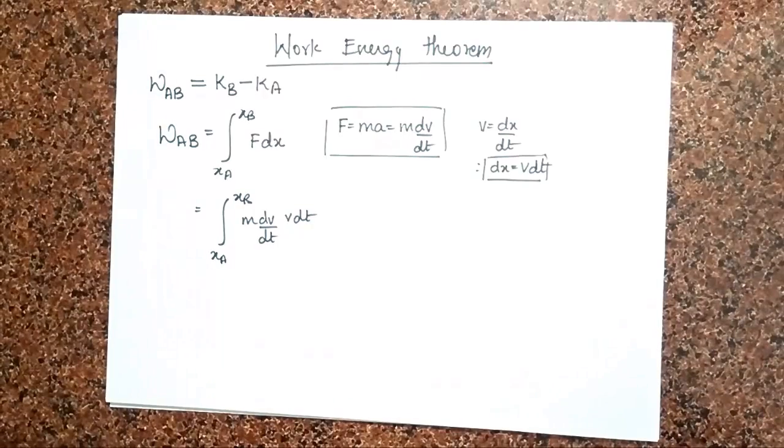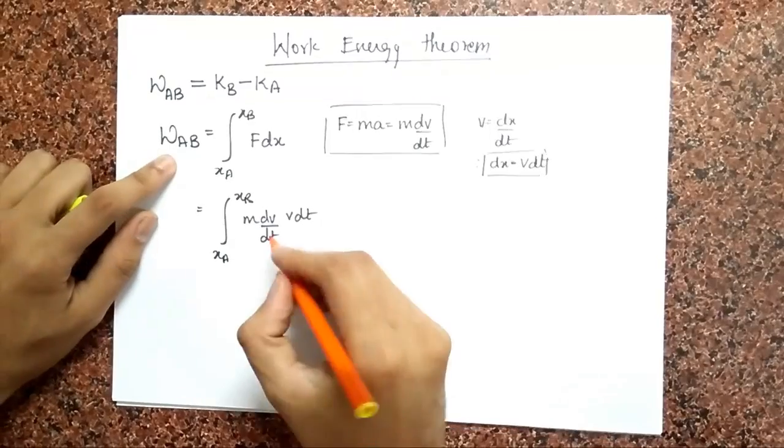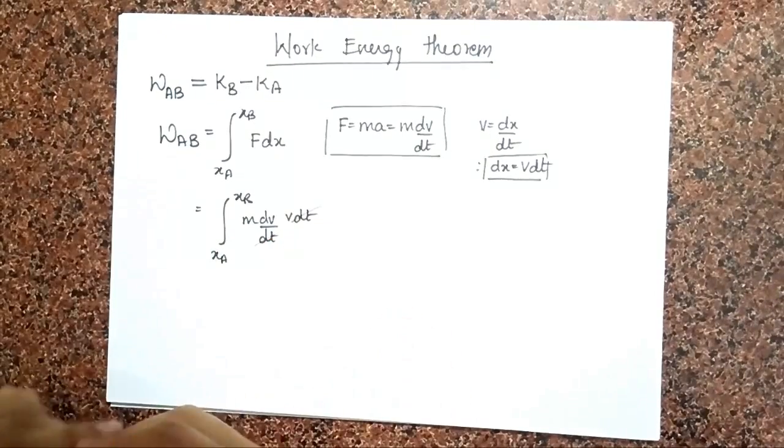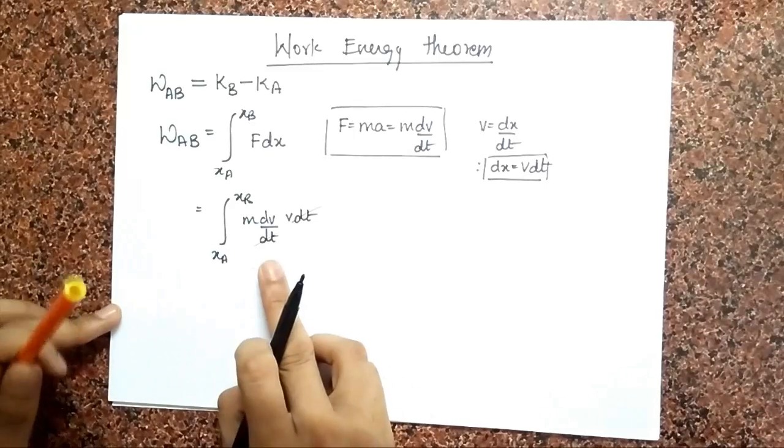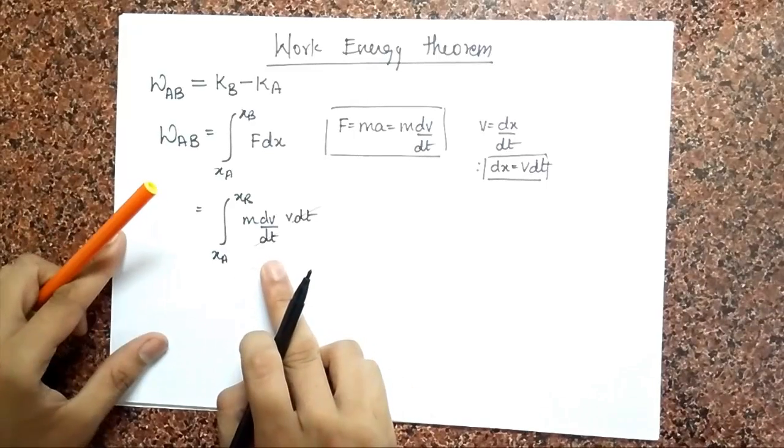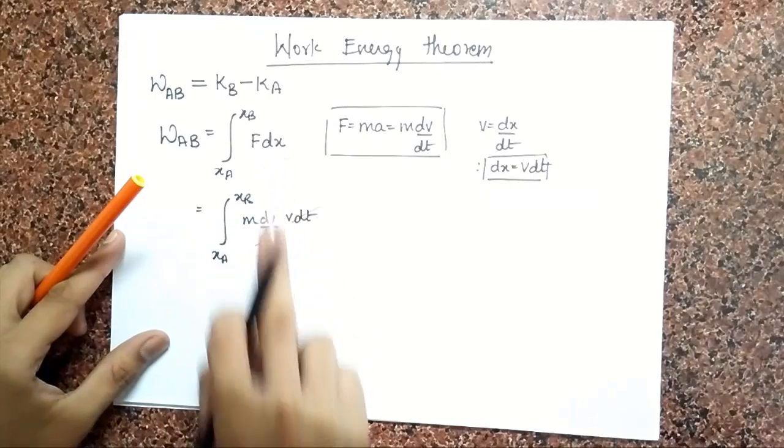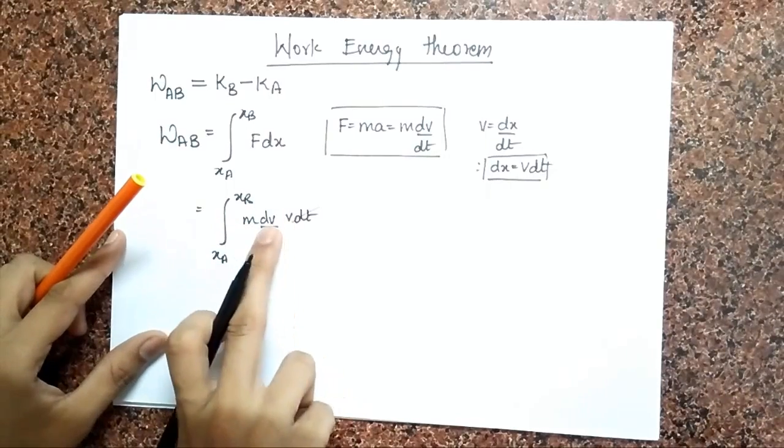And what I can do now is cancel these dts. And so what I would have done by canceling this is I have changed the variable of integration. Before I was integrating with respect to X, and now I am going to integrate with respect to V.